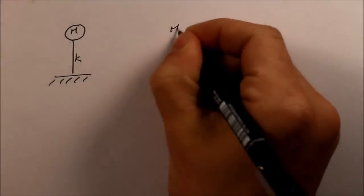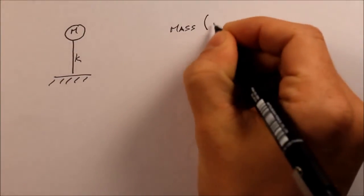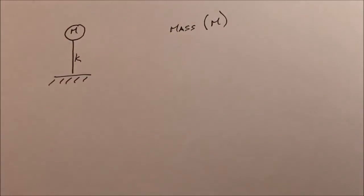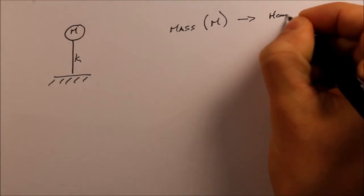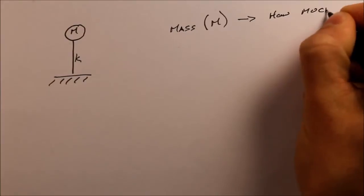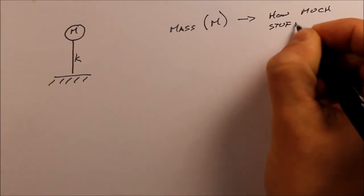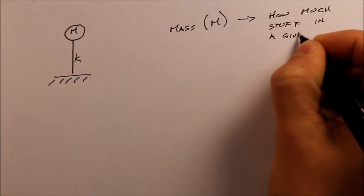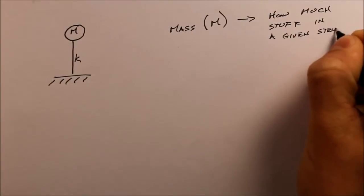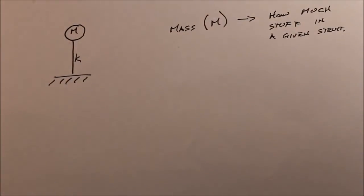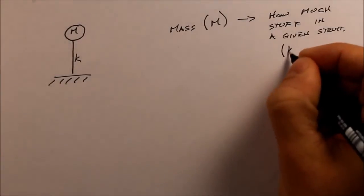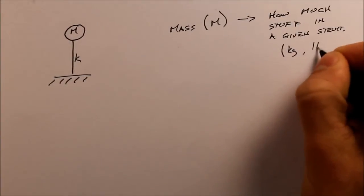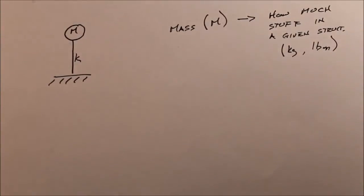So a mass, denoted by the symbol M as I have there, is just simply how much stuff in a given structure. And by stuff, I mean atoms and physical things. So it will have the units kilograms or pound mass or tons, it doesn't really matter.